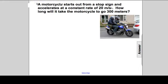In this problem, a motorcyclist starts out from a stop sign and accelerates at a constant rate of 20 meters per second squared. How long will it take the motorcycle to go 300 meters?